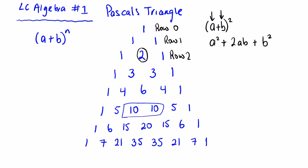Now let's look at the coefficients of all the numbers in this expansion. The coefficient of a² is 1, the coefficient of ab is 2 — you can see where we're going with this — and the coefficient of b² is 1. These match Pascal's row 2: 1, 2, 1. Let's look at a cube next.